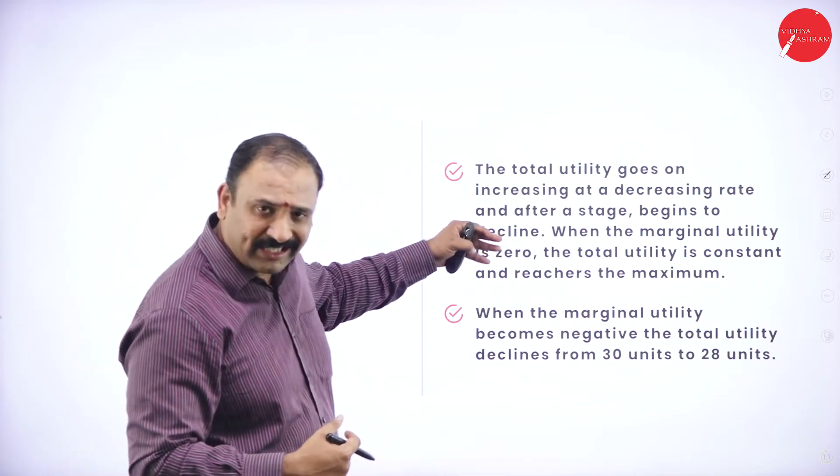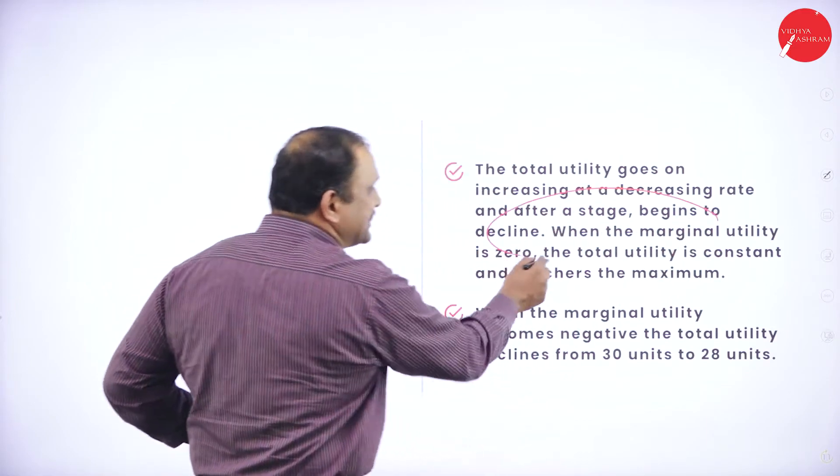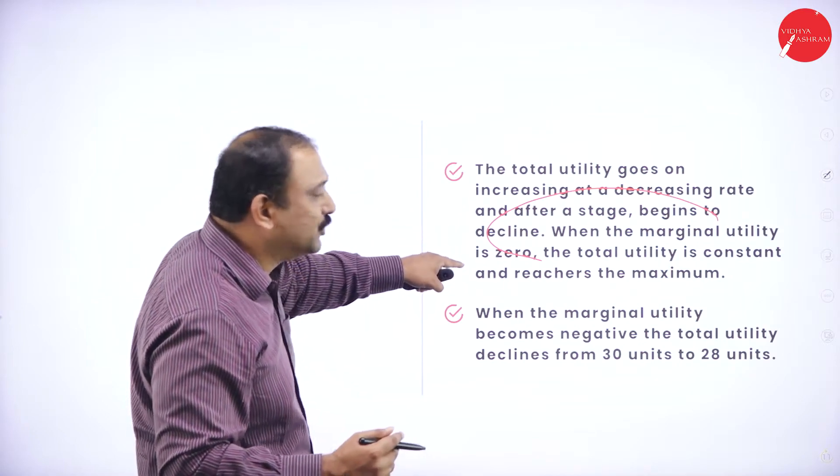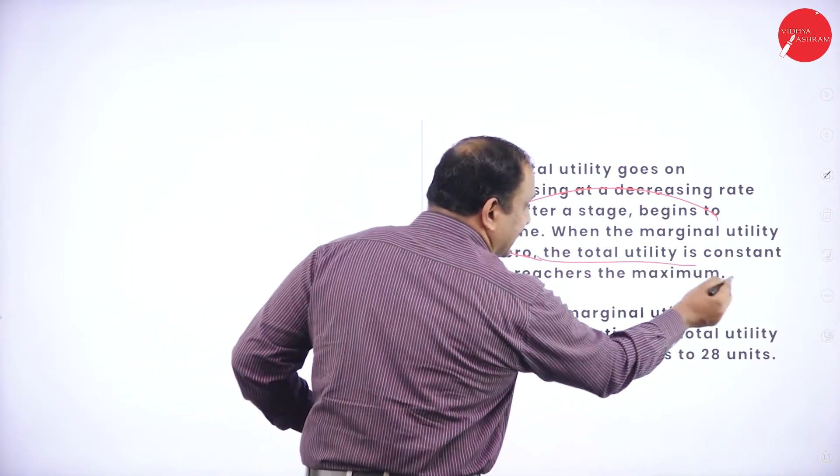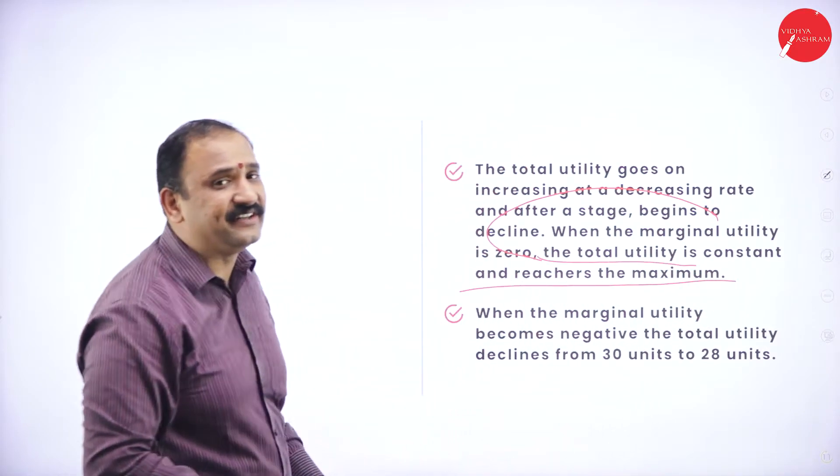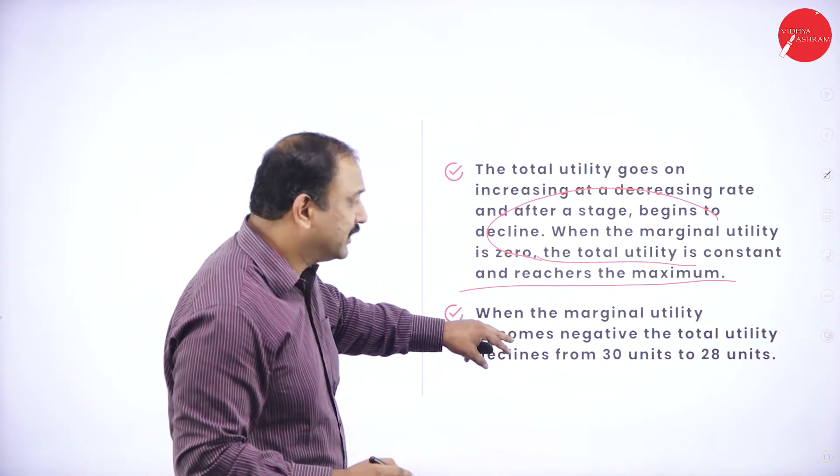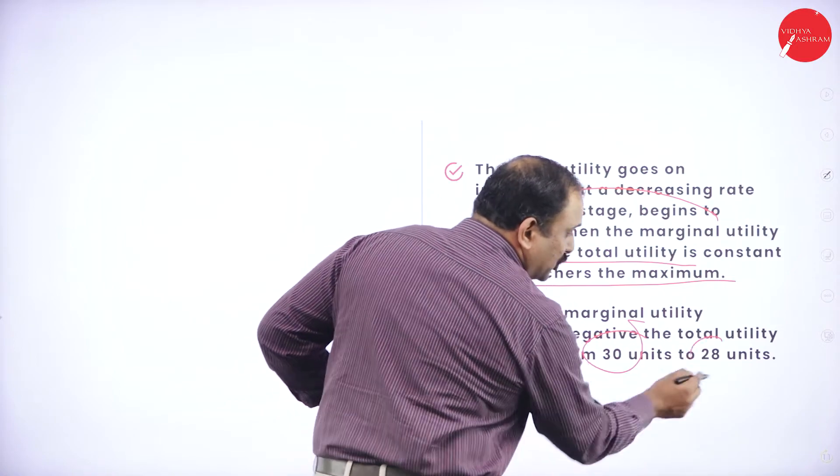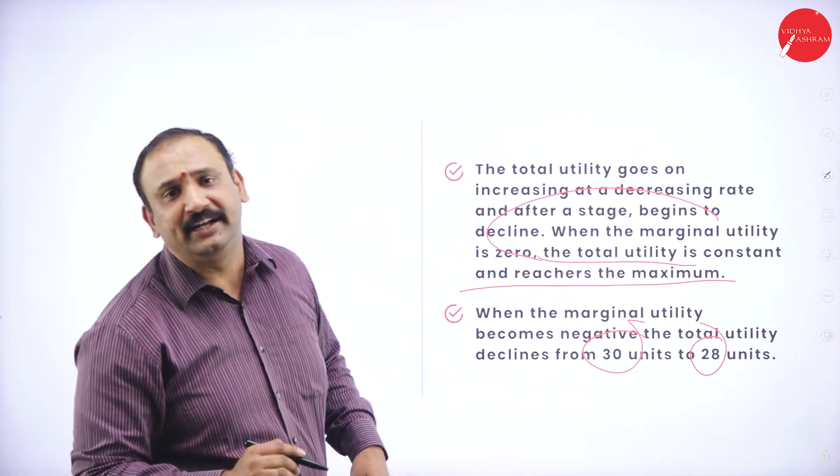The total utility goes on increasing at a decreasing rate and after a stage, it begins to decline. When the marginal utility is zero, the total utility is constant and reaches a maximum value. When the marginal utility becomes negative, the total utility declines from 30 to 28. There you would start seeing a decrease coming into picture.